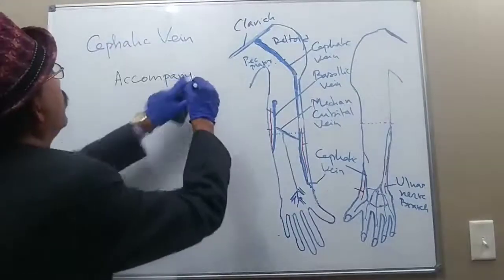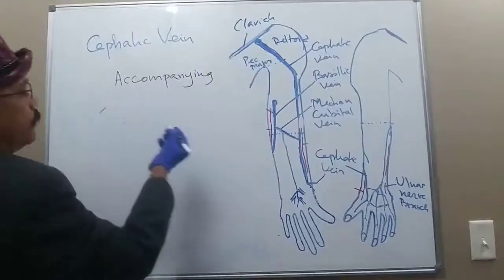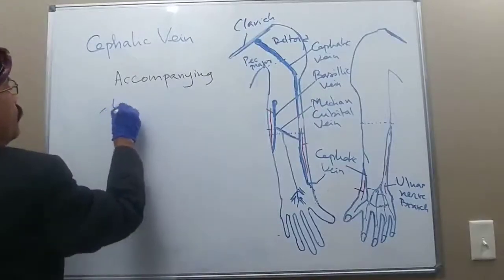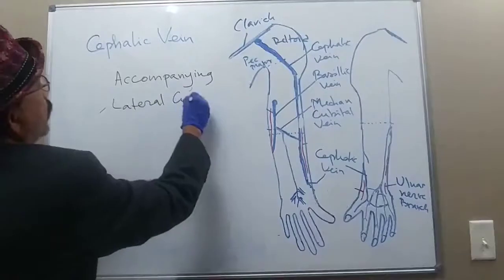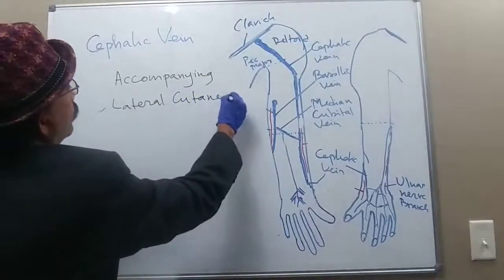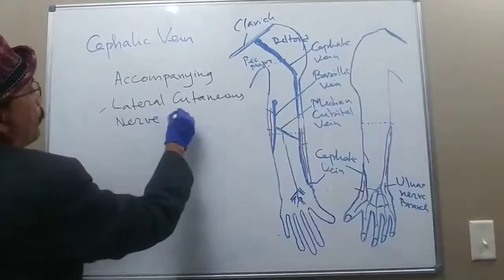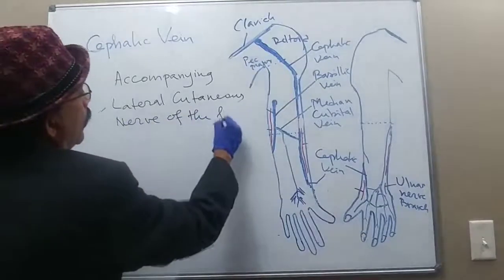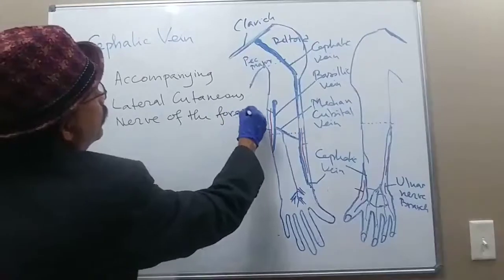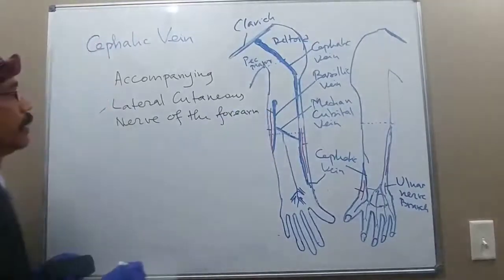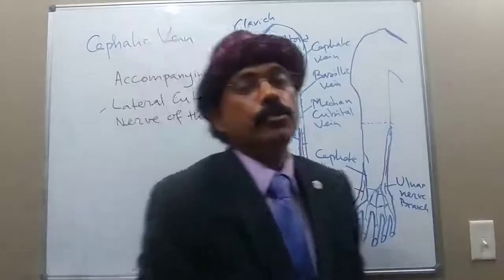The cephalic vein is accompanied by the lateral cutaneous nerve of the forearm. This accompaniment is in the forearm region.